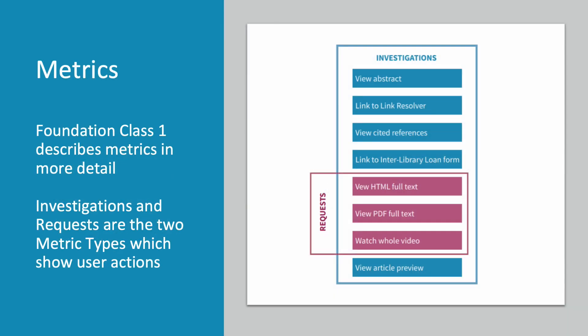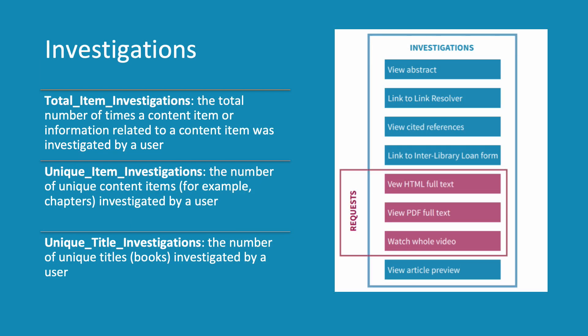Foundation Class 1 describes our metric types in more detail, but here's a quick recap. Investigations and Requests are the two metric types which show user actions. Total Item Investigations is the number of times a content item or information related to a content item was investigated by a user. Unique Item Investigations is the number of unique content items – for example, chapters – investigated by a user, while Unique Title Investigations is the number of unique titles – books in this instance – investigated by a user.